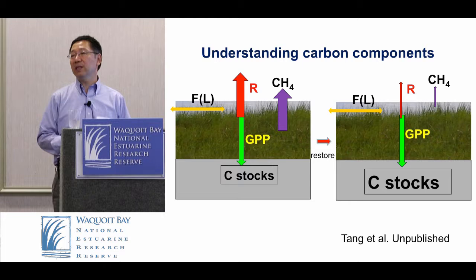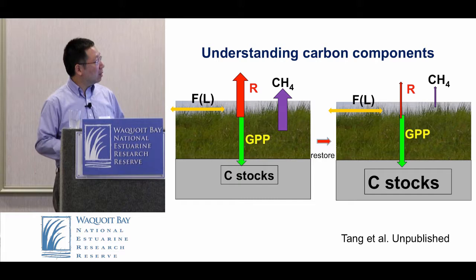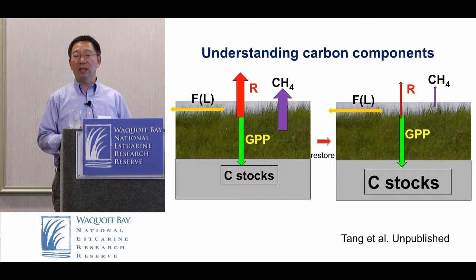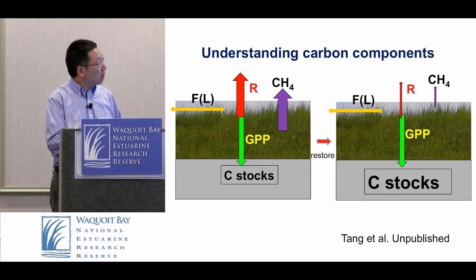And of course, we have methane. A lot of carbon in the soil and sediment is released not as CO2 but as methane, which is an even more potent greenhouse gas, so we have to understand methane. Methane is something full of uncertainty. And there are also a lot of lateral fluxes — carbon in and out through the water, through flooding — because of the coastal system. Carbon can be lost through that lateral exchange. So we have to understand all the components.